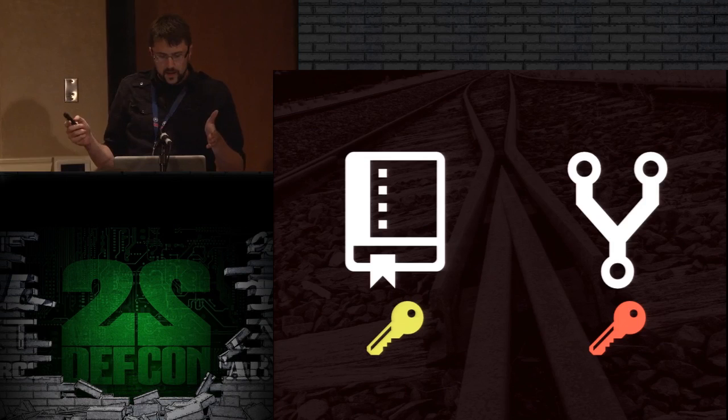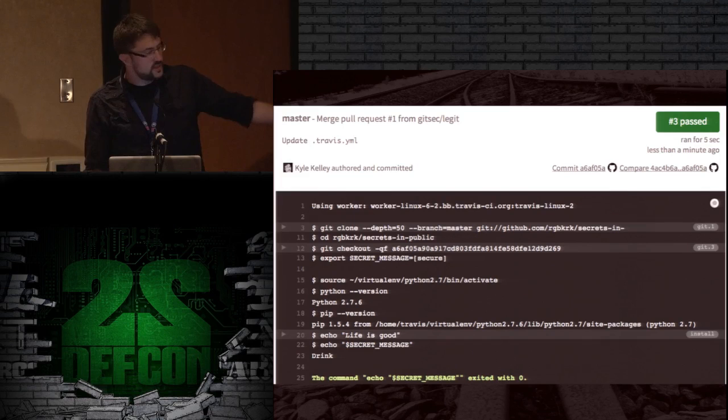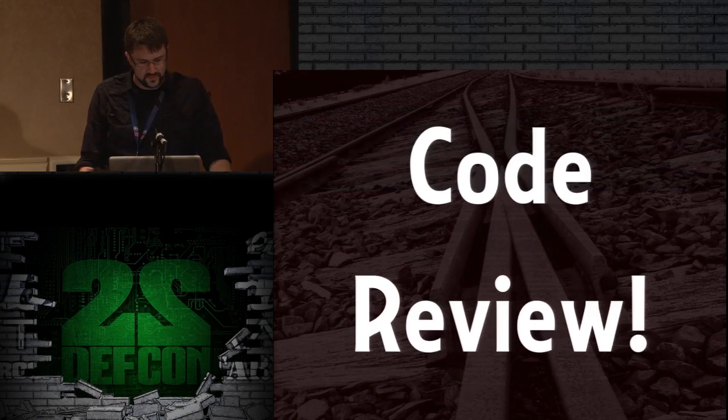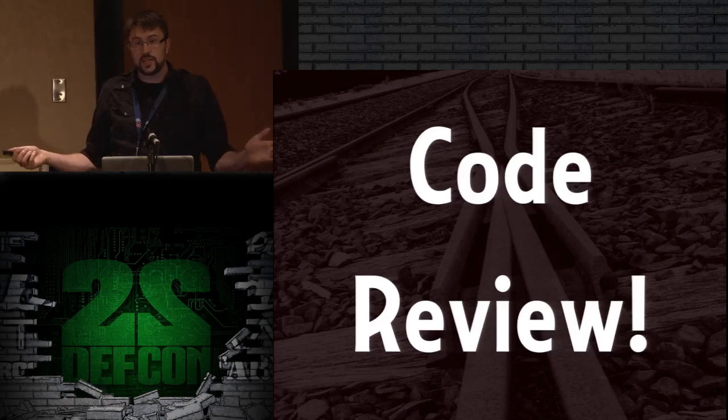So only the stuff on master will get tested with the original keys. If we merge that pull request, the secret message comes through. Your only barrier here is code review — and the fact that you have to trust Travis. At some point Travis is decrypting your secrets and they have the keys, so you have no idea. But those guys drink good coffee and live in Berlin, so I assume they're great.